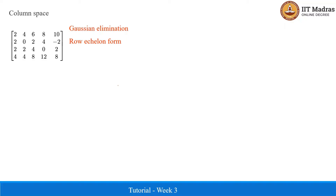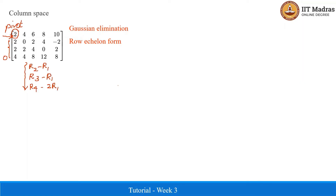To achieve the row echelon form, we reduce the rows of the matrix to get all-zero vectors in certain rows. The first element of the first row in the first column is a non-zero number, 2, which is a pivot element. We then change the elements beneath this pivot to zero through a series of row operations on R2, R3, and R4 based on R1. The first row remains unchanged: 2, 4, 6, 8, 10.